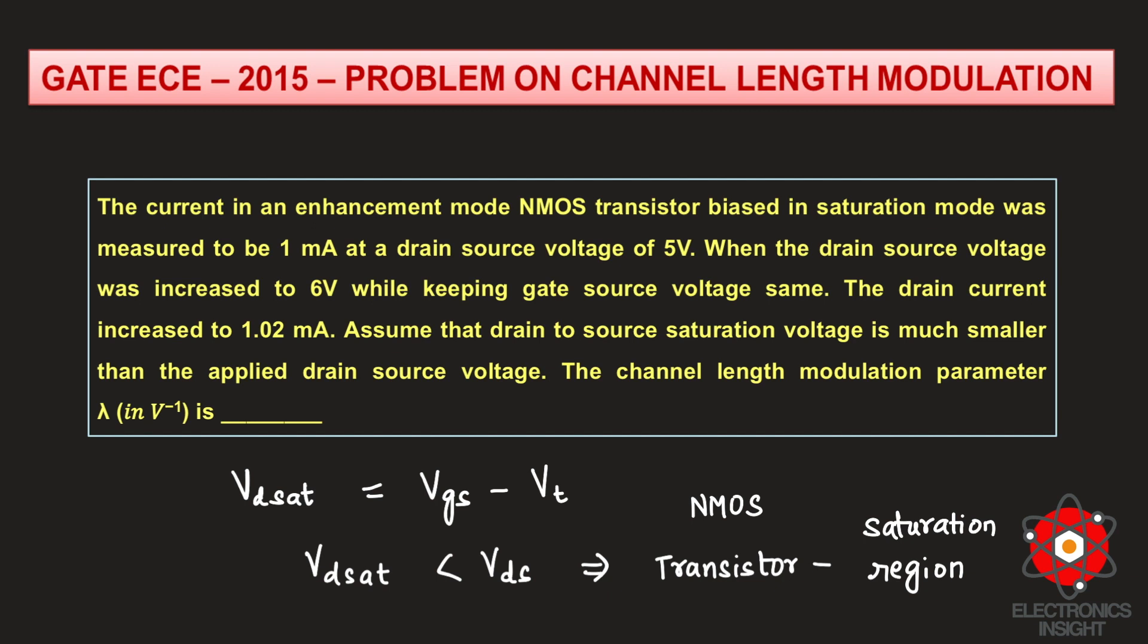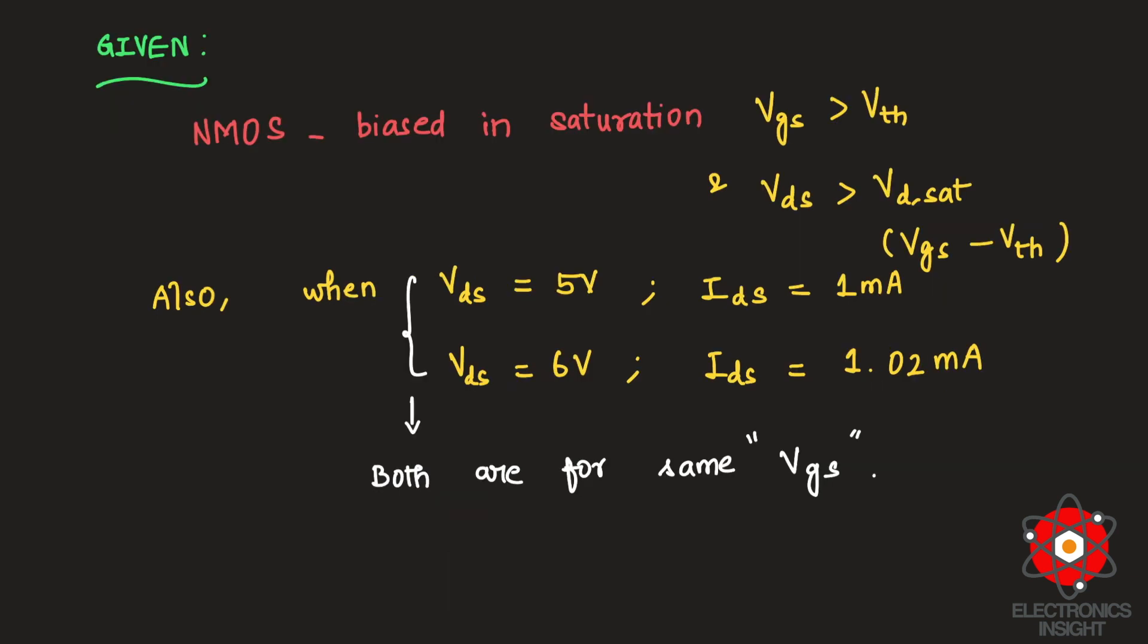With all this given data, we need to obtain the channel length modulation parameter lambda. After reading the problem statement, we understood that when VDS was equal to 5 volts, IDS was equal to 1 milliamp, and when VDS was increased to 6 volts, IDS increased to 1.02 milliamps, both for the same gate-to-source voltage.